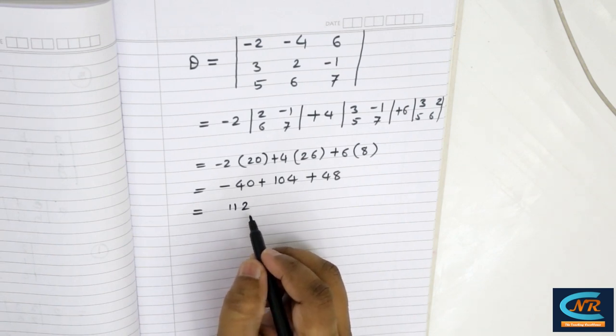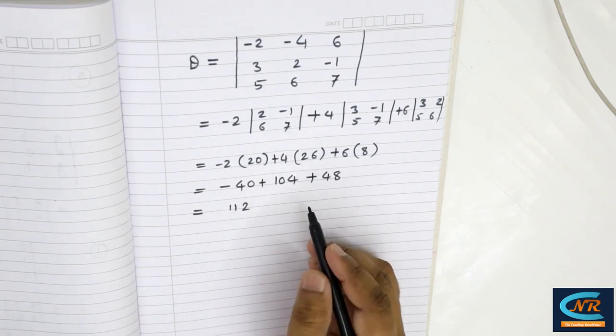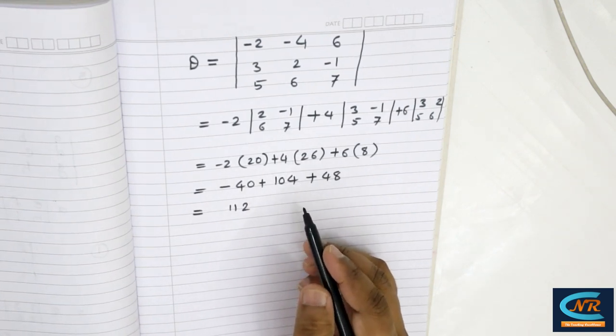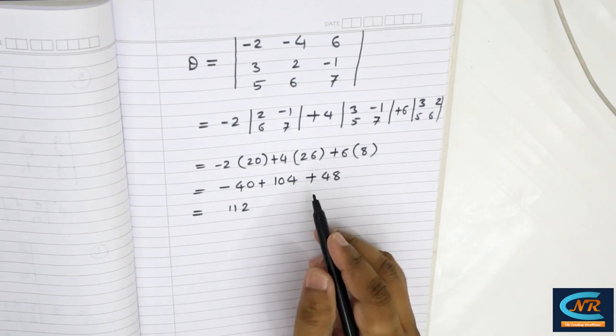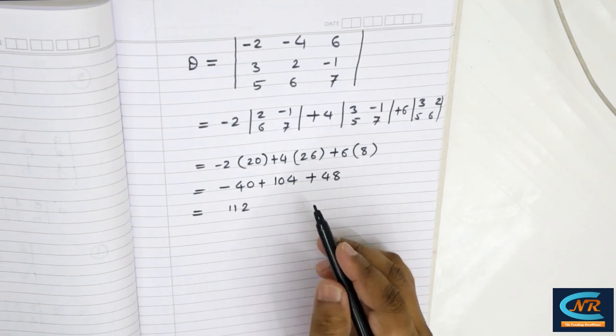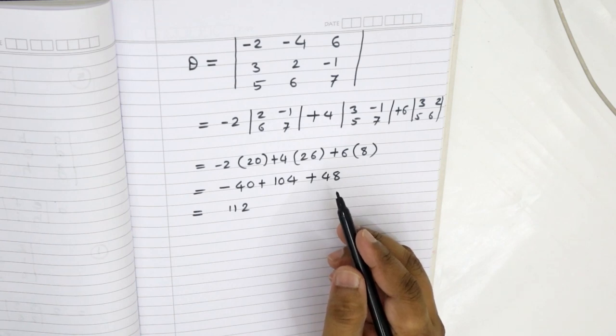Similarly, you can do any type of example of order 2x2 and 3x3. In the next video, we will take an example of order 4x4 as well.